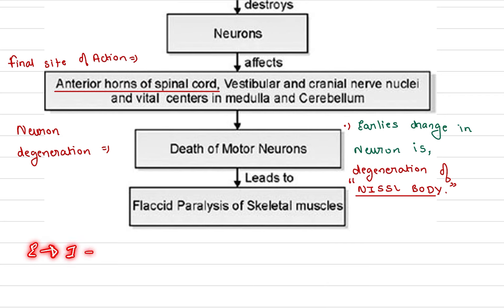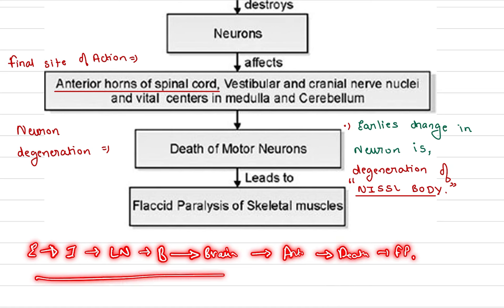Neuron degeneration leads to death of motor neurons. Earliest change in neuron is degeneration of the Nissl body, which finally leads to flaccid paralysis of the skeletal muscles. So entry is through the fecal-oral route, goes into the intestine, then the lymph nodes, then into the bloodstream. From bloodstream, it goes into different cells with the help of receptor CD-155.